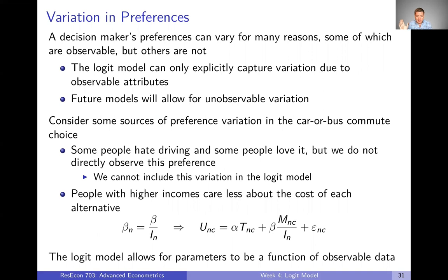Going back to the car or bus commute choice, let's think about some possible variation in preferences. Some people hate driving and some people love it, so you might think there's some parameter representing preference for driving. But we don't directly observe that preference, and unless we assume it's correlated with some observable demographic information, we can't include that variation in the Logit Model — completely unobservable preferences can't go into the model.